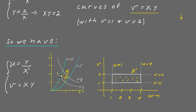Similarly, any point on the first hyperbola plugged into v = xy gives v = 1, so all those points fall on the horizontal line v = 1, and plugging into u = y/x² tells you exactly where along that line the point maps. So what ends up happening is these transforms take this unusual boundary and map it to a simple boundary, and they take this unusual region and map it to a much simpler region — just a rectangle in the uv-plane.